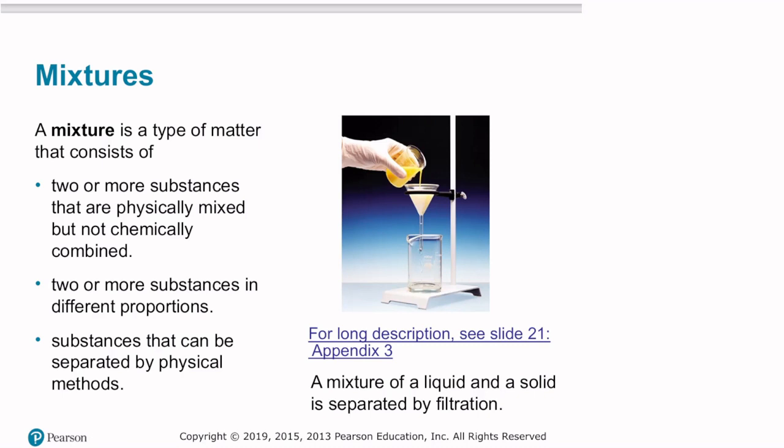A mixture is a type of matter that consists of two or more substances that are physically mixed but not chemically combined. Two or more substances in different proportions, or substances that can be separated by physical methods. A mixture of a liquid and a solid, for example, can be separated by filtration. Here we have an example of a liquid and a solid in a mixture. We could separate something, for example, like sand and water, which is a heterogeneous mixture. We could separate sand and water by filtration.